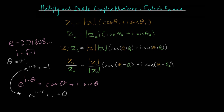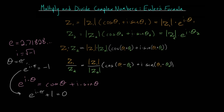We can rewrite complex numbers using Euler's formula instead of the expression cosine of the angle plus i times the sine of the angle. For Z1, we can rewrite this as the magnitude of Z1 multiplied by e to the i times theta one — a more compact way of writing this number. And for Z2, we can write this as the magnitude of Z2 multiplied by e raised to the i times theta two.